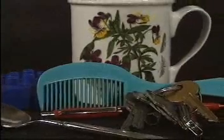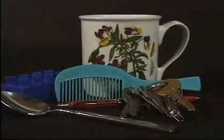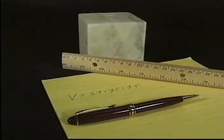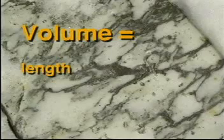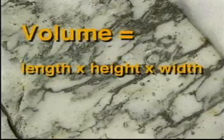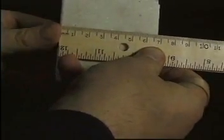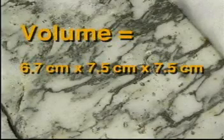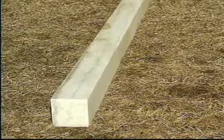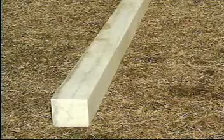The volume of solids can be measured in a couple of different ways. For solids with a regular shape, like our piece of marble, the volume can be computed using a ruler and doing some simple calculations. The volume equals length times height times width. With our piece of marble, the length is 6.7 centimeters, the height is 7.5 centimeters, and the width is 7.5 centimeters. These are then multiplied to get a volume of 376.9 cubic centimeters.